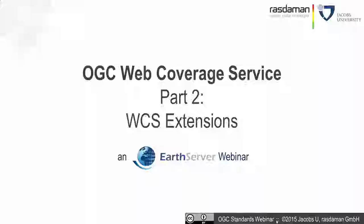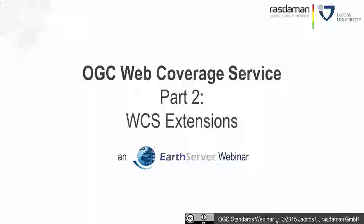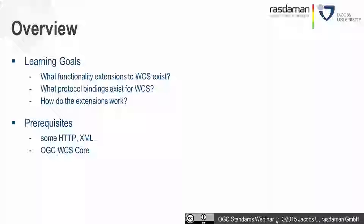The learning goals are: we want to understand what functionality extensions exist, how these can be encoded — that is what protocol bindings exist — and how the extensions work. Prerequisites, as usual, is just a little bit of HTTP and some XML. And of course you should know WCS core. If you want to learn more about that first, there is a particular webinar — WCS part one.